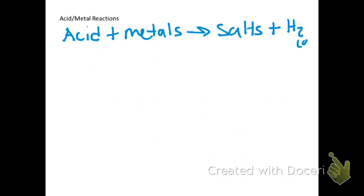Let's move on to a very important category of acid reactions, and that's with metals. Acids react with metals to form salts. Remember, salts are just ionic compounds plus hydrogen gas. You're always going to form hydrogen gas.